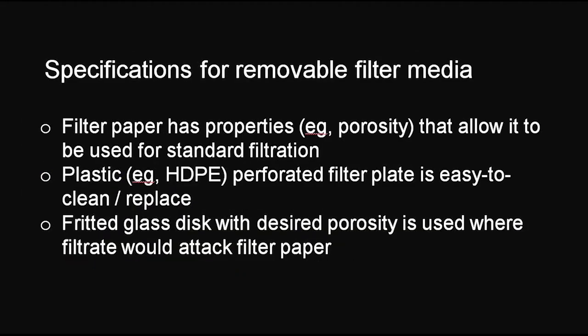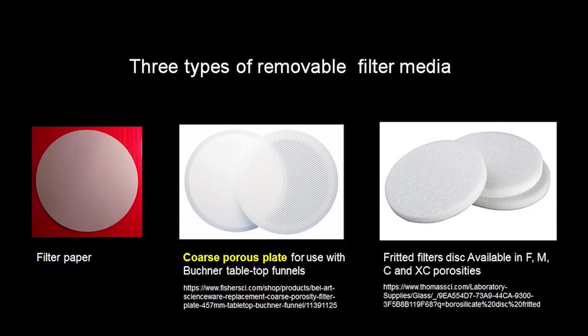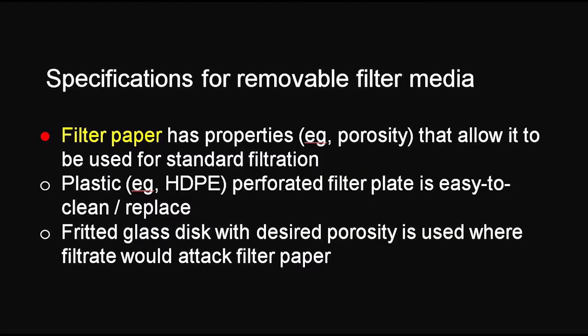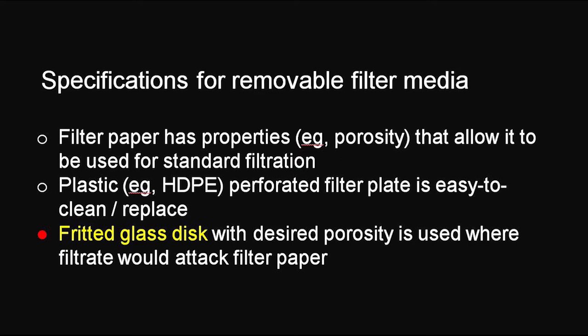Some vacuum filter funnels have removable filter media. Common examples are filter paper, plastic perforated filter plate, and fritted glass disc. Filter paper has properties such as porosity, particle retention, and volumetric flow rate that allow it to be used for standard filtration where solutions are not particularly aggressive. High-density polyethylene perforated filter plate is easy to clean or replace. Fritted glass disc with desired porosity is used where filter paper cannot withstand the chemical attack of the filtrate.